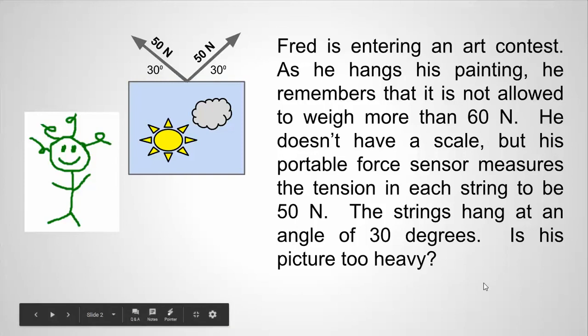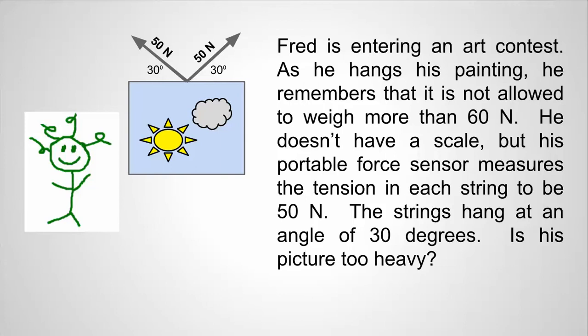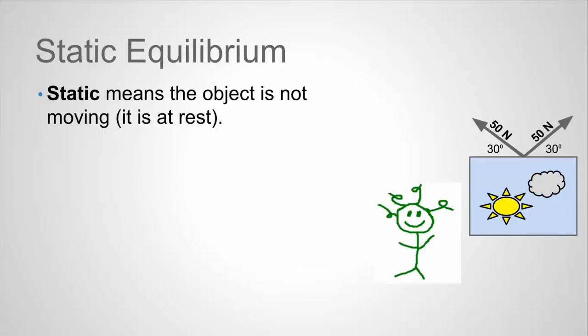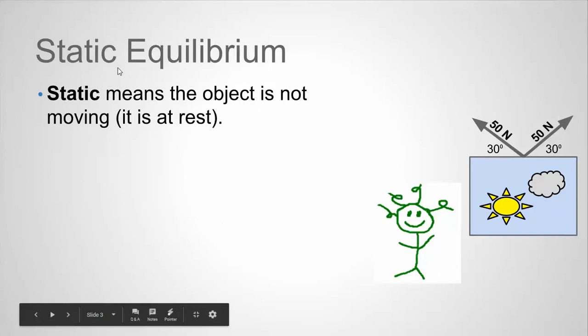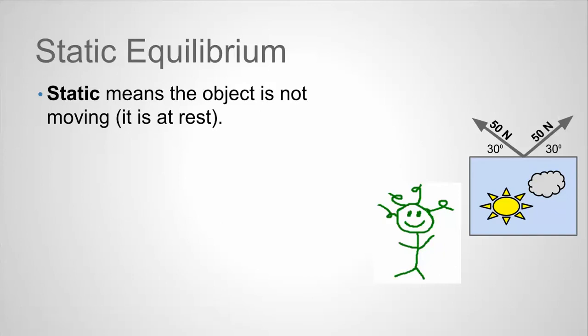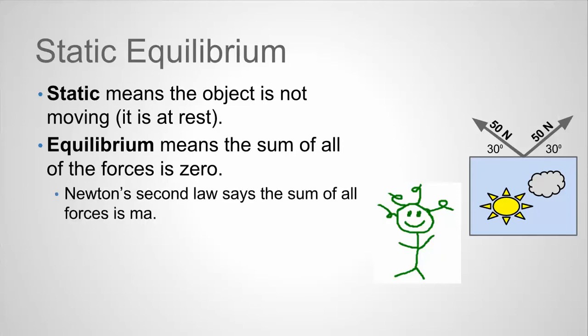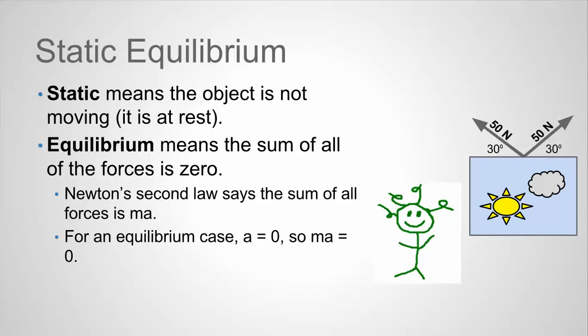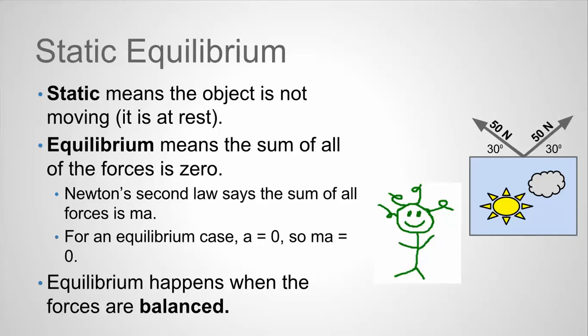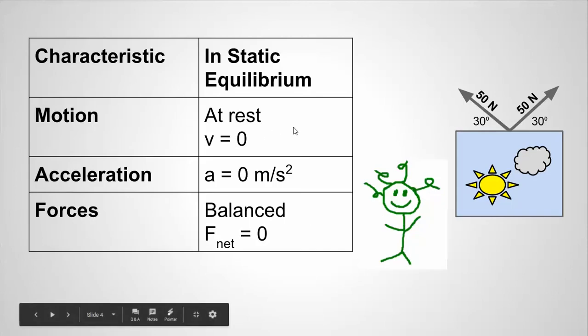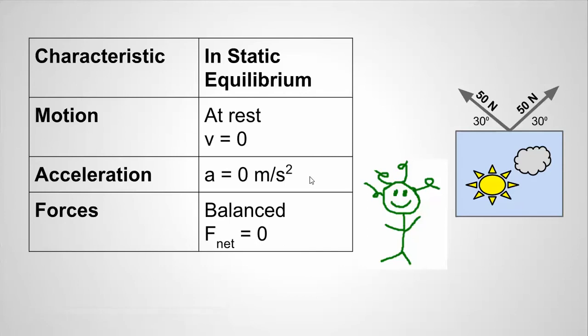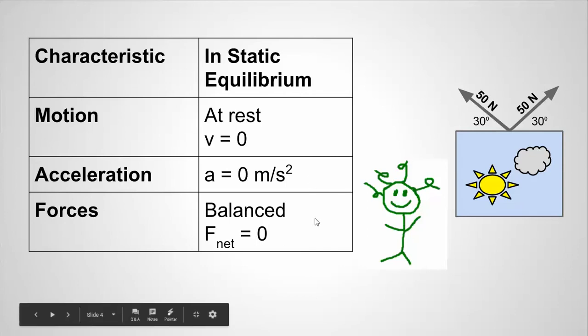To understand this, we're going to break the forces into components and look at what static equilibrium is. Static means the object is not moving — it is at rest, so this painting is static. Equilibrium means the sum of all the forces is zero. Newton's second law says the sum of all forces equals mass times acceleration. In an equilibrium case, the acceleration must be zero, so mass times acceleration is zero. Equilibrium happens when the forces are balanced, meaning the sum of all forces in each direction equals zero. The basic characteristics of static equilibrium: the object is at rest, it has no velocity, its acceleration is zero, and the net force in either direction is zero.